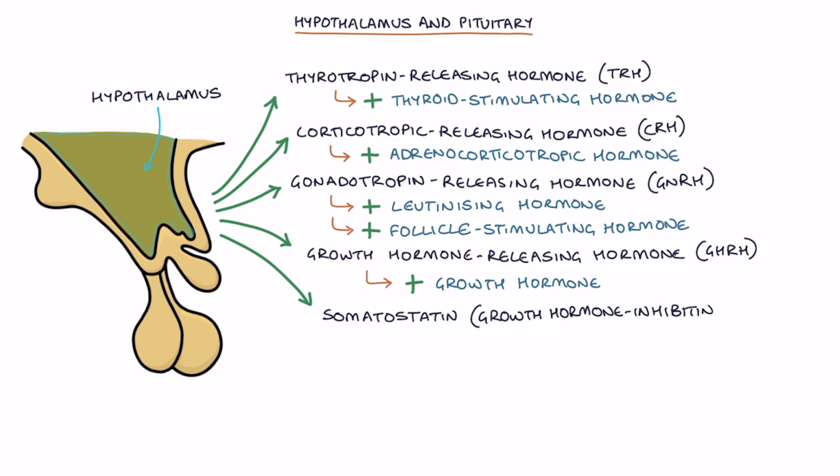Growth hormone-inhibiting hormone or GHIH which inhibits growth hormone release by the pituitary gland and dopamine which is also called prolactin-inhibiting hormone or PIH which inhibits prolactin release by the pituitary.